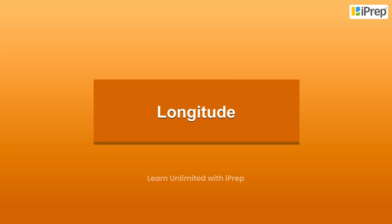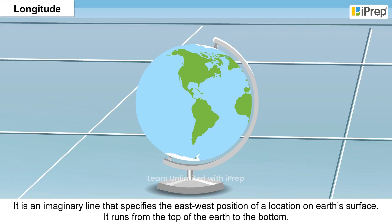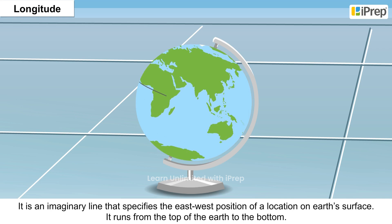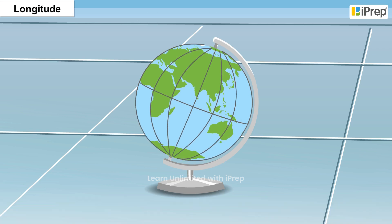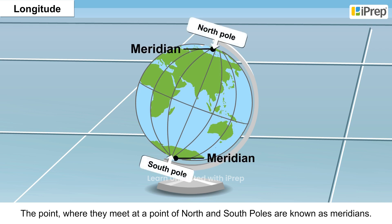Longitude is an imaginary line that specifies the east-west position of a location on Earth's surface. It runs from the top of the Earth to the bottom. The points where they meet at the North and South Poles are known as meridians.